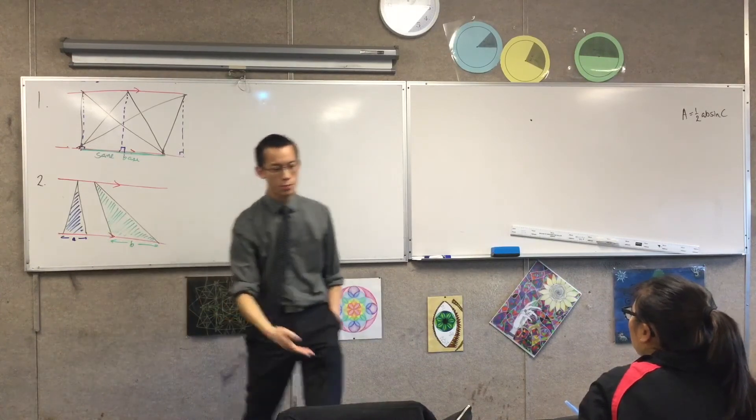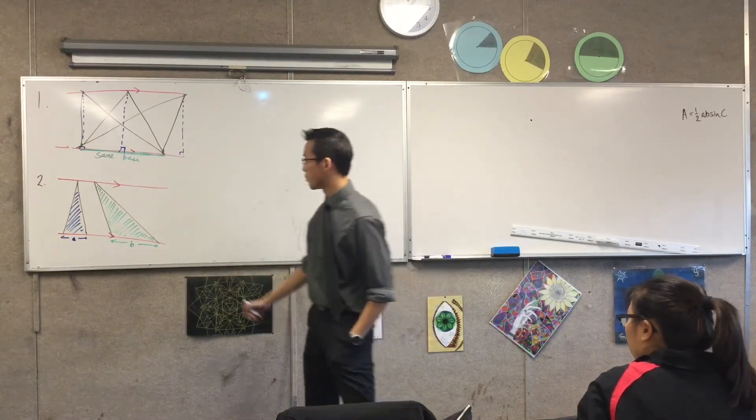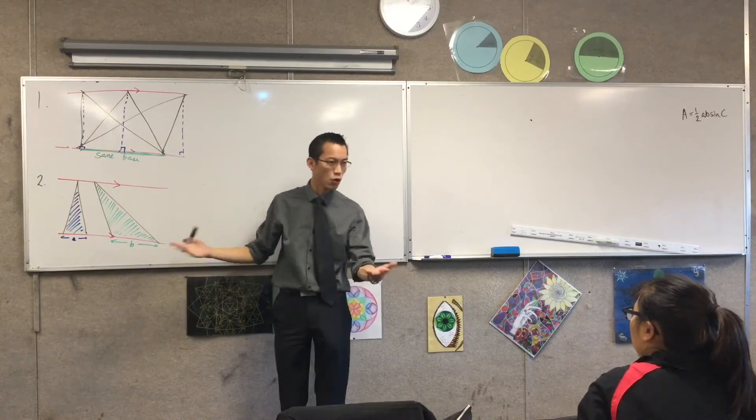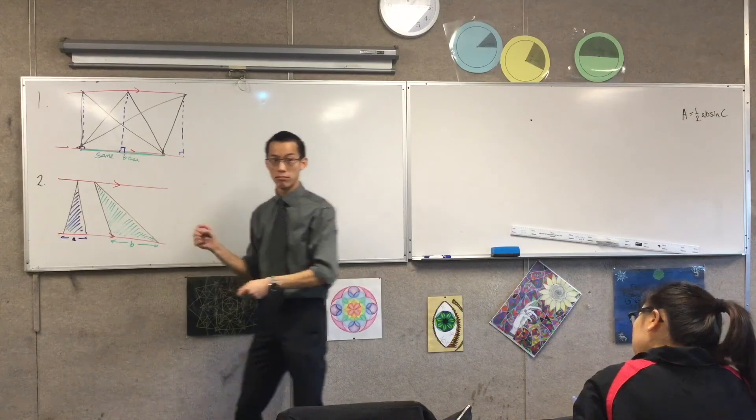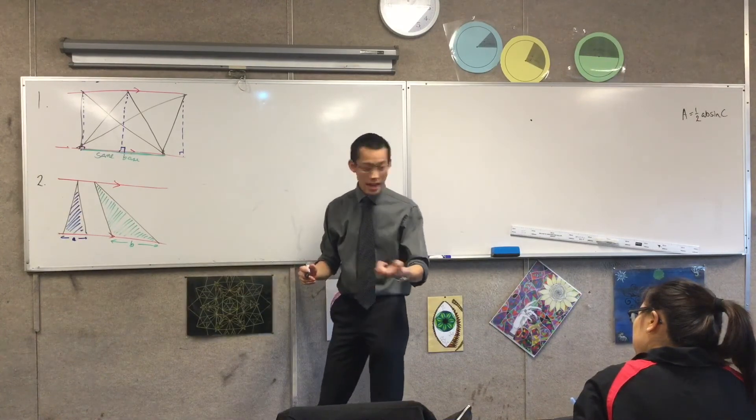So for example, if I actually called the perpendicular height of this H, as we often do, okay, what would the area of this actual triangle be? The blue one. Yeah, very good.